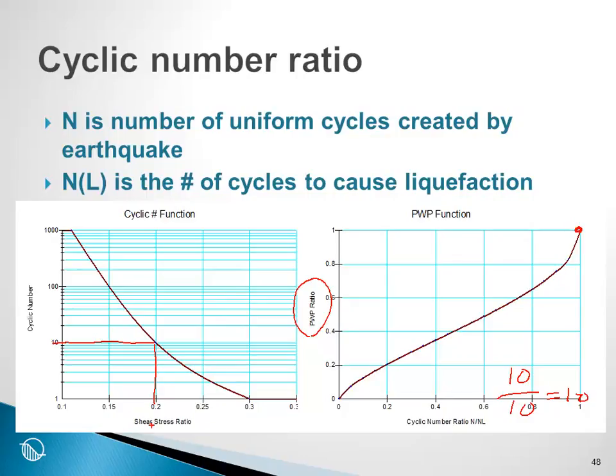If the shear stress ratio was some larger number, it would take, say, 5 cycles. And so we would have 10 divided by 5 equals 2, which is greater than 1. Therefore, the soil would have liquefaction, and the pore pressure ratio would be 1.0.